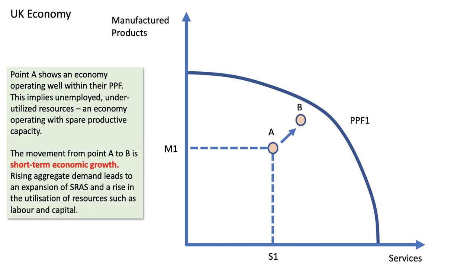A movement from point A to point B is short-term economic growth. Aggregate demand is increasing for goods and services, and that leads to an expansion of short-run aggregate supply.